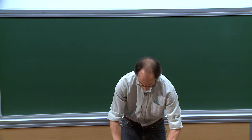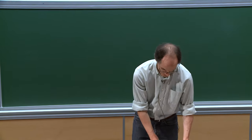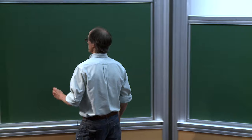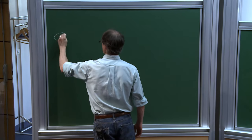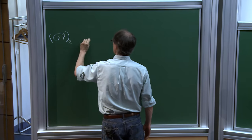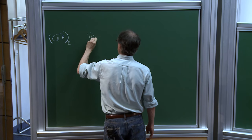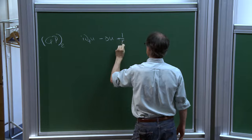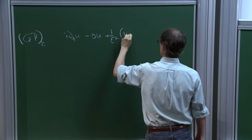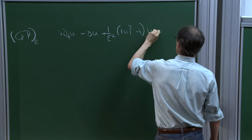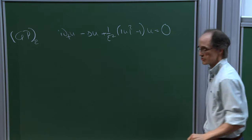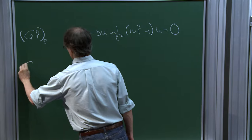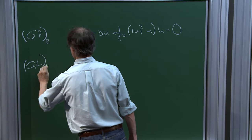Let me first write down the equations I'll be studying. There are two equations I'm interested in. The first I'll call the Gross-Pitaevskii equation; it has a parameter epsilon. I'll also consider the elliptic counterpart, which I'll call Ginzburg-Landau with epsilon — this is a bit of a misnomer.